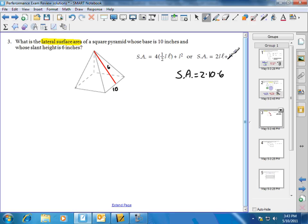So we just have 2 times 10, which is 20, times 6, which is 120. So the lateral surface area is 120 square inches, and that's what we need, that's what we're looking for for number three.